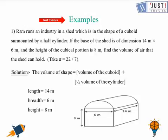In this example, Ram runs an industry in a shed which is in the shape of a cuboid surmounted by a half cylinder. If the base of the shed is of dimension 14 m × 6 m and the height of the cubical portion is 8 m, find the volume of air that the shed can hold. If you look at this picture, you can see that we need to find the volume of the cuboid and we need half of the volume of this cylinder.